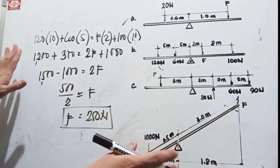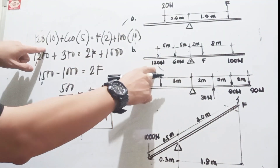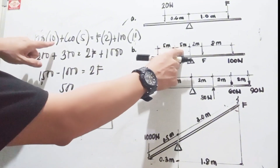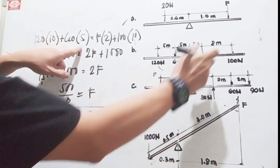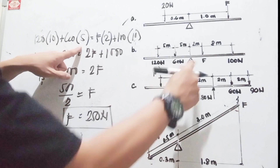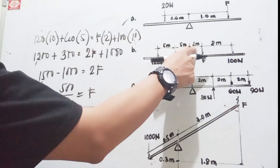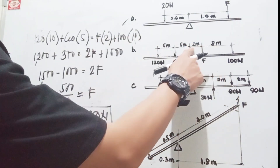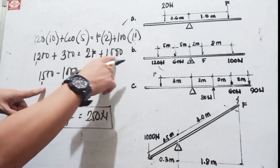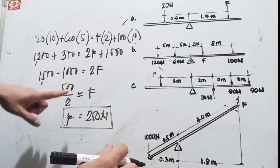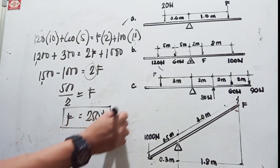To repeat: counterclockwise forces on the left — 120 multiplied by 10 (since 5 and 5), and 60 Newtons multiplied by 5. The clockwise forces go on the right: force multiplied by 2, and 100 multiplied by 10 (since 2 plus 8). We get 1,500 equals 2F plus 1,000.